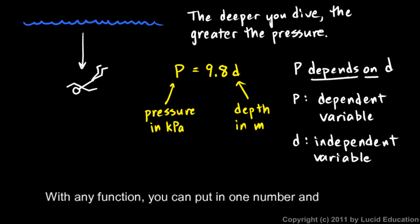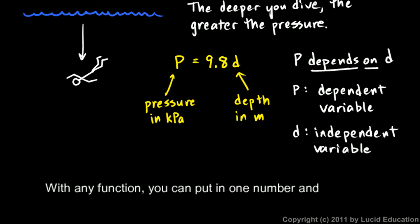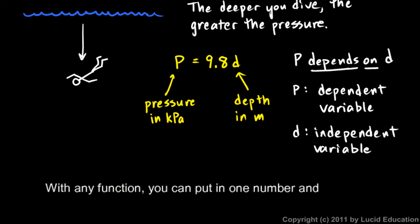So think of P as the output. Come down in your notes: with any function, you put in one number and get out another. And that's a key idea of a function—putting in one number and getting out another, thinking of an input and an output.